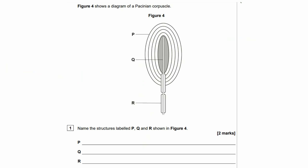Let's look at an exam question. Figure 4 shows a diagram of a Pacinian corpuscle. Name the structures P, Q and R shown in Figure 4. Pause the video.